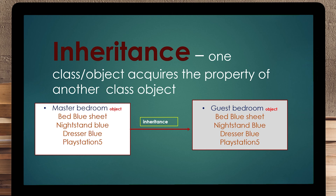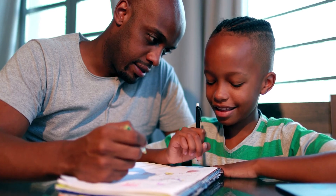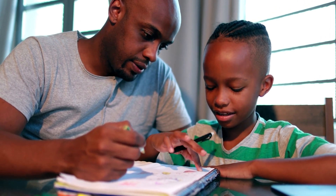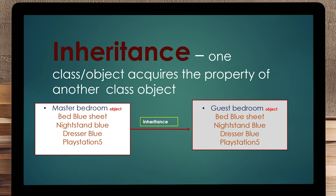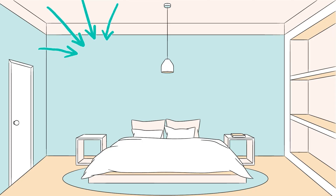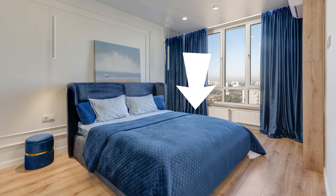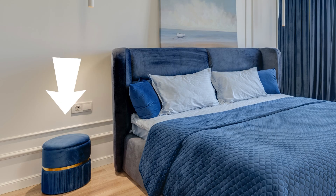Let's talk about inheritance. Inheritance is something that makes sense to everybody — it's an English word. One person is inheriting from another; a father passes it down to their child. This is the easiest one to get your arm around. The example outlined here is that we have a master bedroom object. Everything we point to, we're going to call it an object.